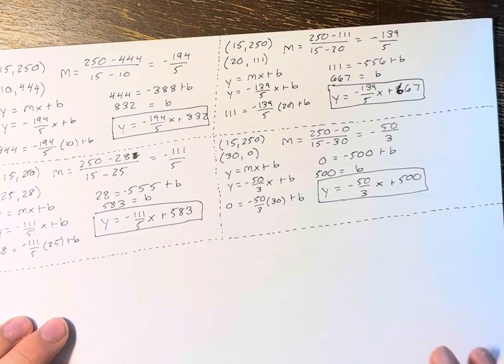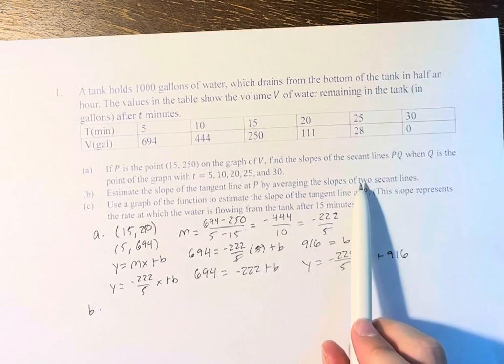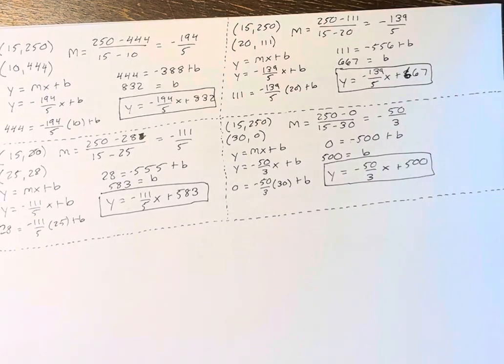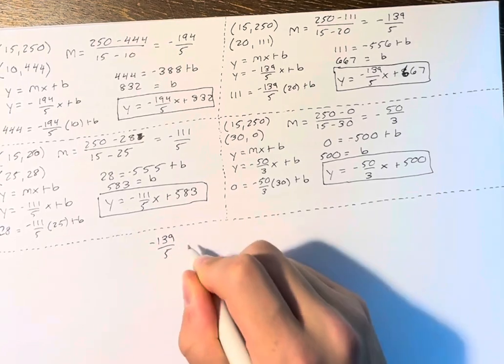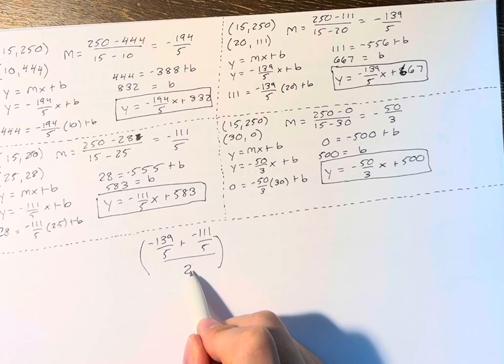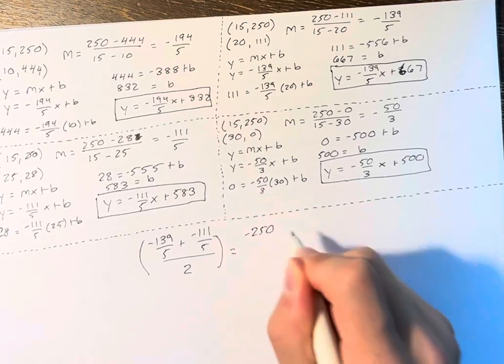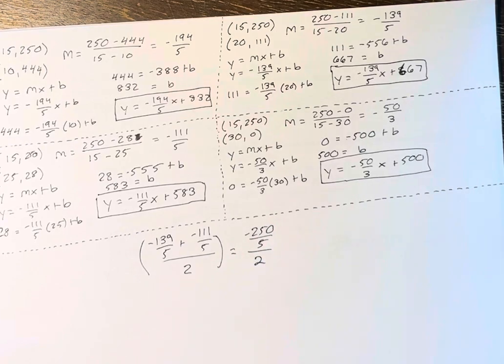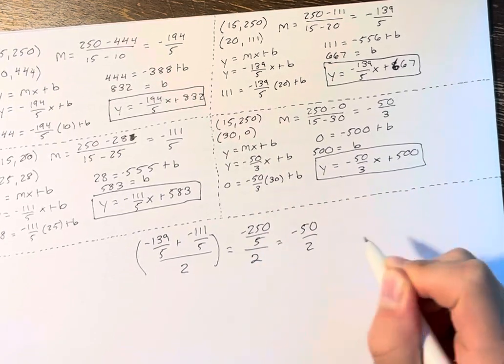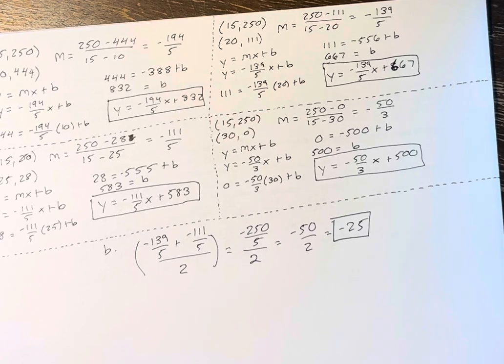Part B asks us to estimate the slope of the tangent line at P by averaging the slope of two secant lines. So if we take two of the slopes from this part right here, we can take negative 139 over 5 and add it to negative 111 over 5. If you add them together and divide by 2, then we get the average. Same denominator, so you add the numerators, this gives us negative 250 over 5 over 2. Negative 250 divided by 5 is negative 50 over 2, which is negative 25. So the estimated slope based on the averages is going to be negative 25.